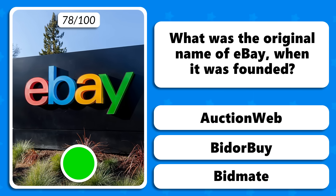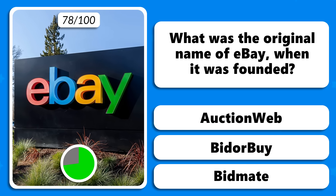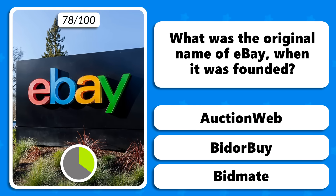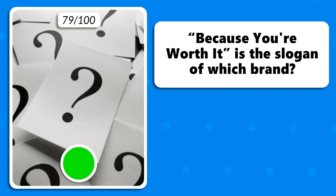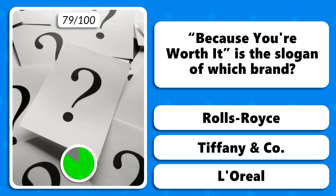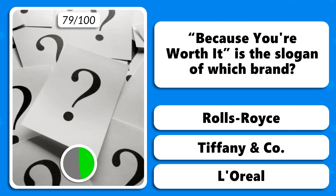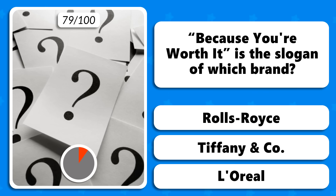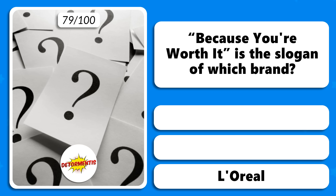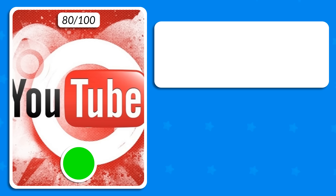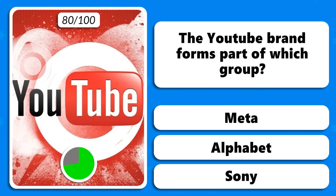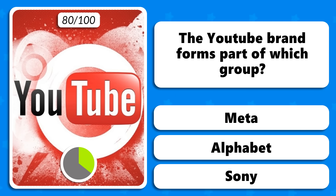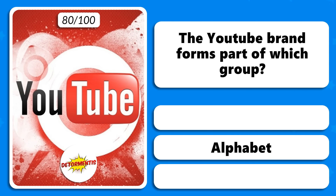What was the original name of eBay when it was founded — AuctionWeb, Bid or Buy, or Bidmate? Because you're worth it is the slogan of which brand — Rolls Royce, Tiffany or L'Oreal? It is the L'Oreal slogan. The YouTube brand forms part of which group — Meta, Alphabet or Sony? Alphabet.